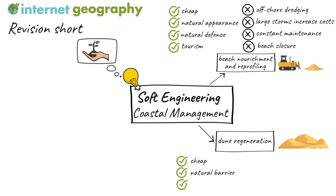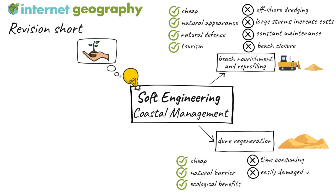Dune regeneration can increase biodiversity by providing a greater range of natural habitats for plants, animals and birds. Although there are a range of benefits associated with dune regeneration, there are also disadvantages. It can be time-consuming to plant vegetation such as marram grass. Dunes can be easily damaged by storms. Careful management is required, keeping people off the newly planted vegetation, and people need to be educated about dune management schemes, often through signage.